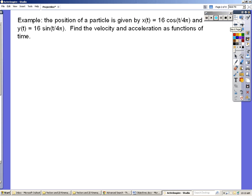So here's an example. You've got a particle and its position is given, or its x coordinate is given by the function 16 cosine t over 4π, and its y is given by 16 sine t over 4π. If you've worked with parametric functions before, you will probably recognize that this is something moving in a circle. What we want to do is find the velocity and the acceleration as functions of time.